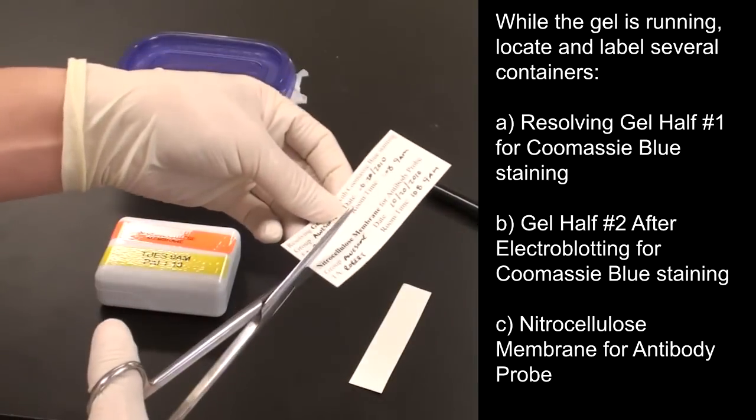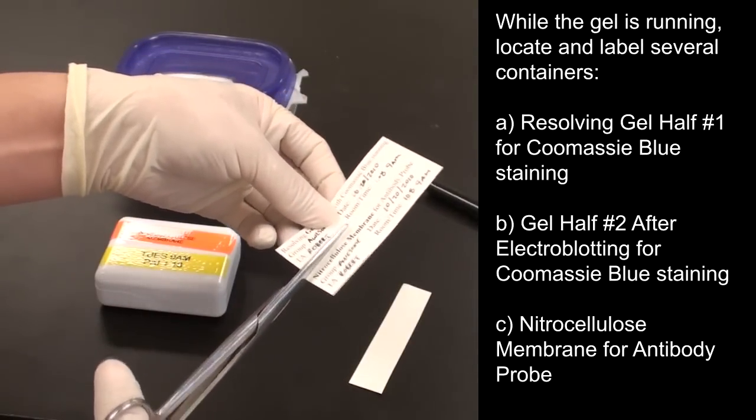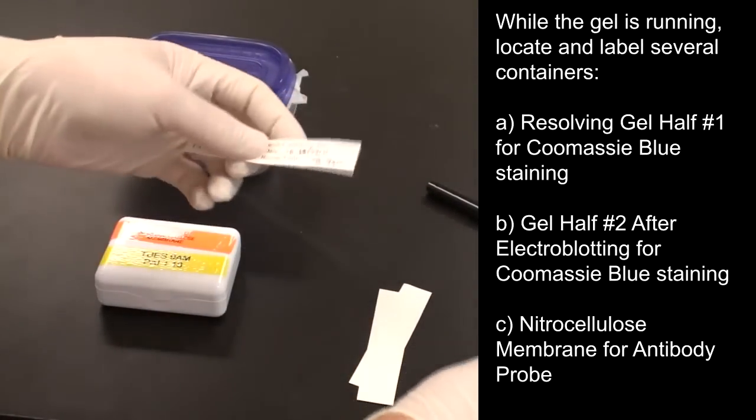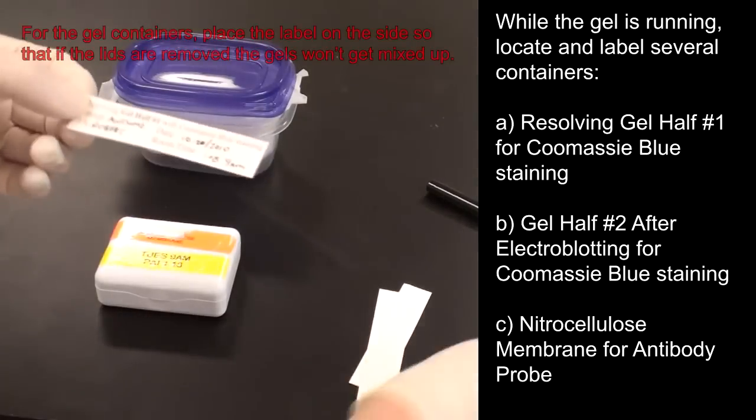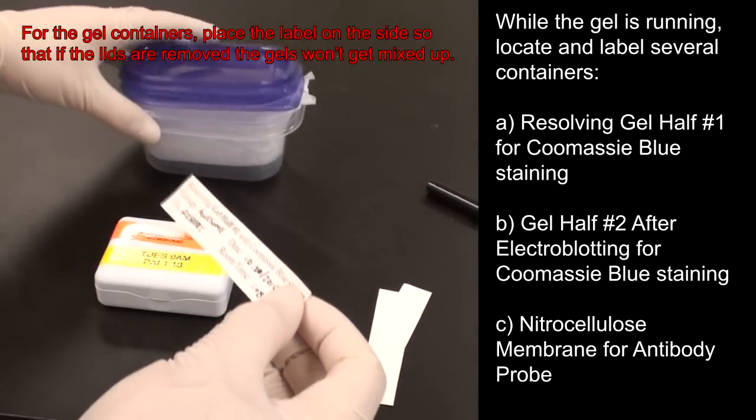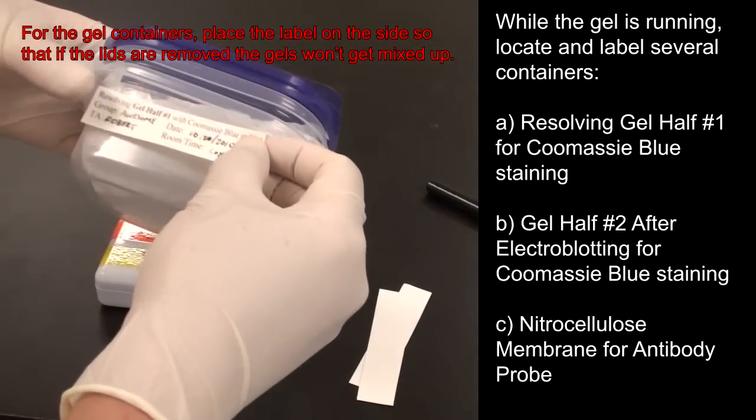While the gel is running, locate and label several containers. Two for the gels and one for the nitrocellulose membrane. For the gel containers, place the label on the side so that if the lids are removed, the gels won't get mixed up.